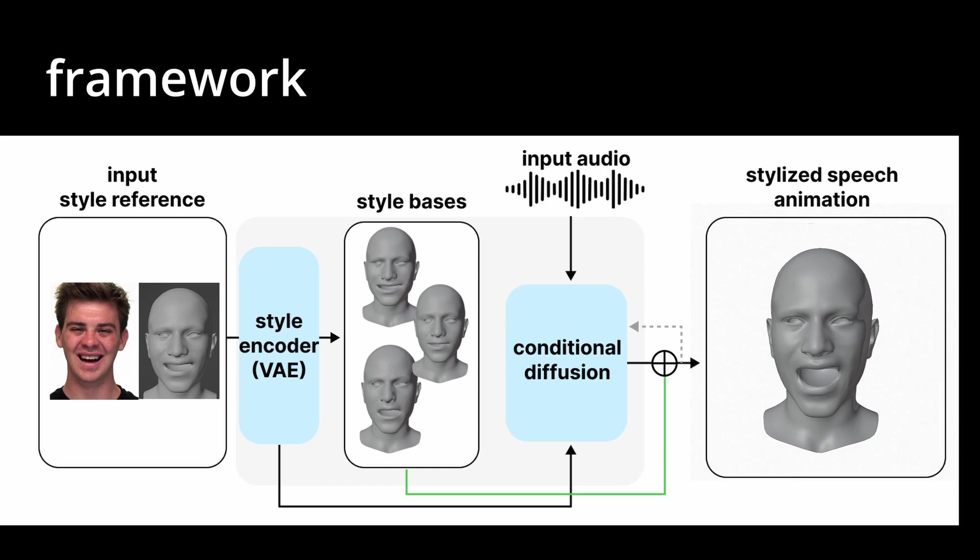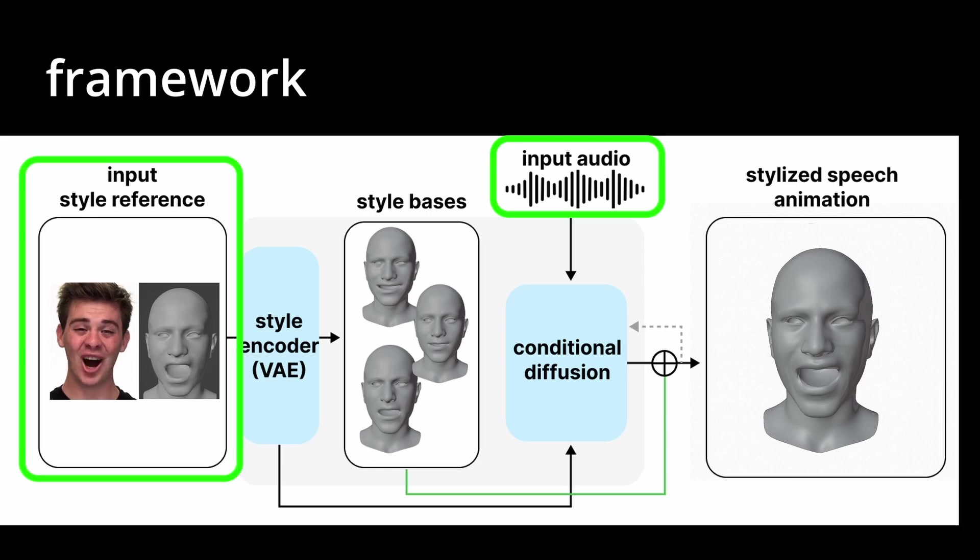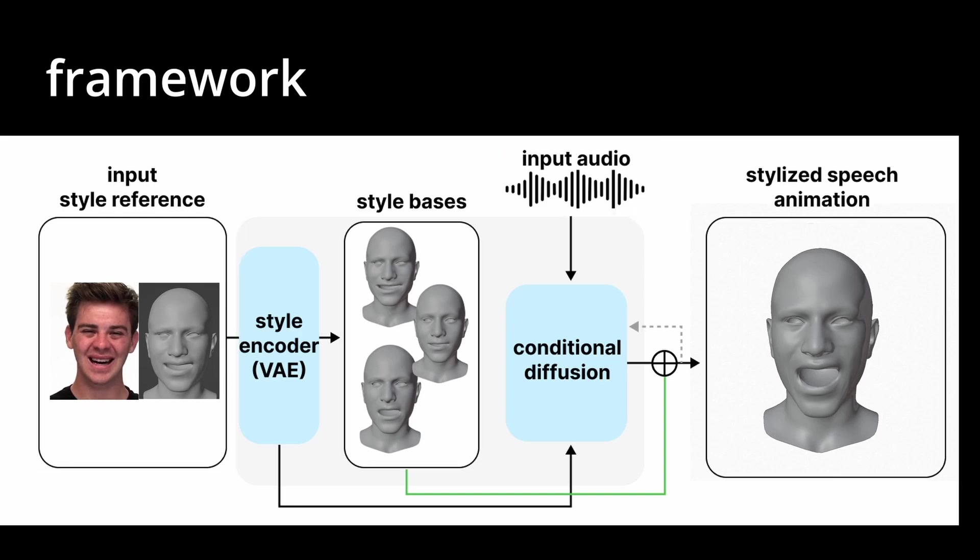Our framework consists of a latent diffusion model conditioned on both speech audio and motion from a style reference. The reference motions are encoded with a variational autoencoder, which generates a latent code and what we call style basis, which are static blend shapes that capture key poses from the reference.